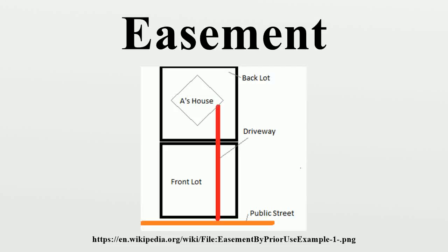An easement is a non-possessory right to use or enter onto the real property of another without possessing it. It is best typified in the right-of-way which one landowner, A, may enjoy over the land of another, B. It is similar to real covenants and equitable servitudes in the United States.